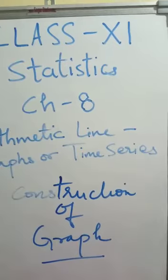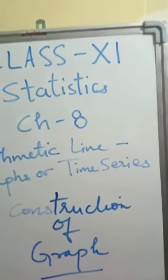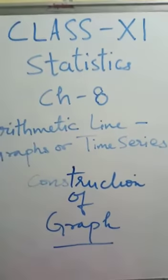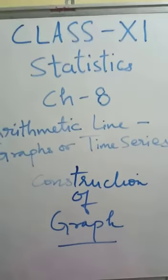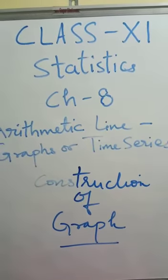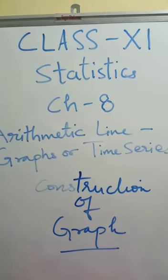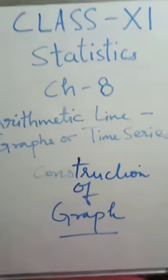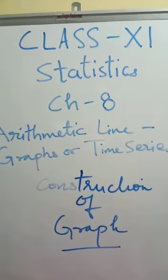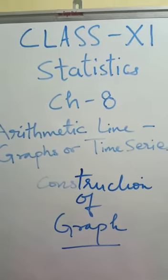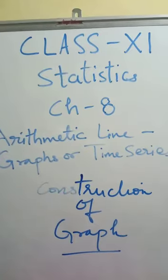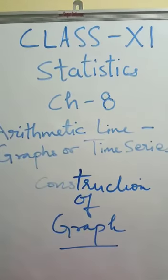So students, the x-axis and y-axis are mutually perpendicular to each other. These axes divide the plane of the paper into four parts. Each part is known as a quadrant. As in the graph given on which we have discussed, there are some rules relating to the construction of graphs.